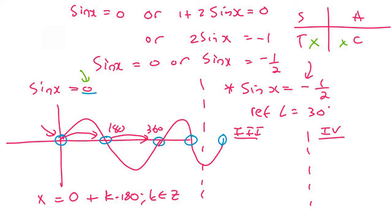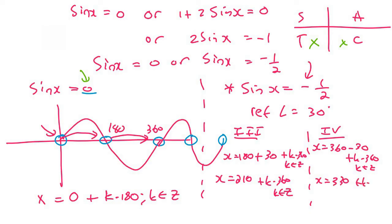And so in quadrant 3, I'm going to say x equals to 180 plus, because that's how quadrant 3 goes, then the reference angle. Then I'm going to say k times 360, k is an element of z. Then in quadrant 4, we know that that's the 360 minus. And then we're going to say our reference angle. And then plus k times 360, k is an element of z. And then we can solve. x equals to 210 plus k times 360, k is an element of z. And then for this one, it's x equals to 330 plus k times 360, k is an element of z.